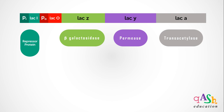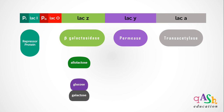Beta-galactosidase is an enzyme that will convert lactose into allolactose. Beta-galactosidase will also break down lactose into glucose and galactose. Permease is a channel-forming protein that catalyzes the transport of lactose from outside the media into the bacterial cell.